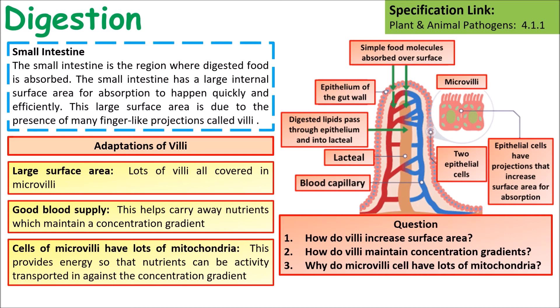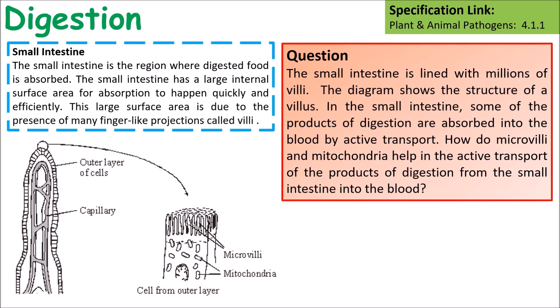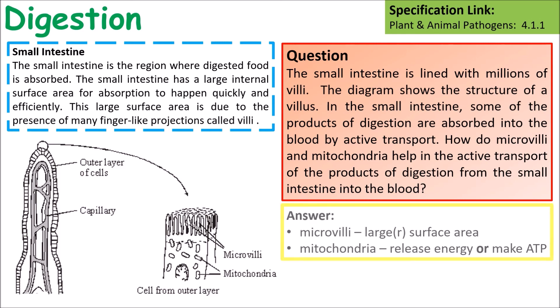Key questions: how do villi increase surface area? There are lots of villi and each is covered by microvilli. How do villi maintain the concentration gradient? They have a good blood supply. Why do microvilli cells have lots of mitochondria? To carry out active transport and move nutrients into cells against the concentration gradient. Exam question: how do microvilli and mitochondria help with active transport? Microvilli increase surface area; mitochondria release energy used for active transport.